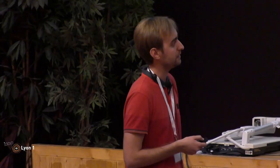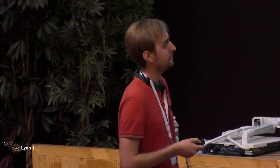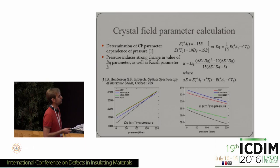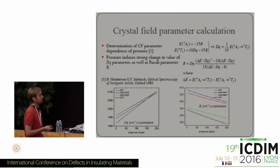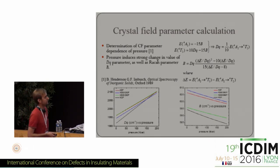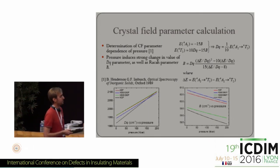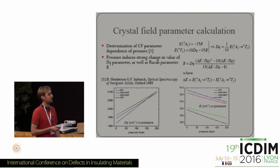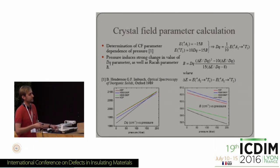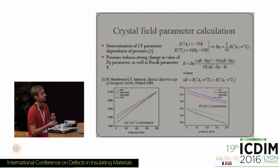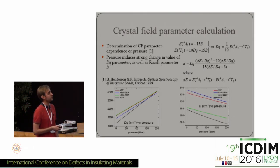We performed basic calculations of crystal field parameters and discovered that, beside the DQ crystal field strength parameter changing quite a lot for every sample, we also found that the Racah parameter B, which describes the interaction between the d3 electrons in manganese 4+, is also changed under pressure.